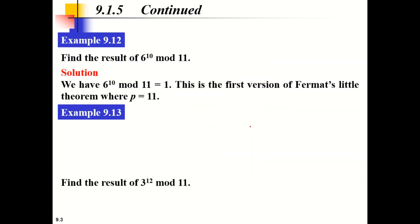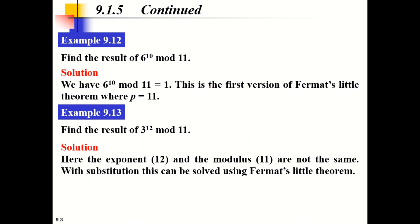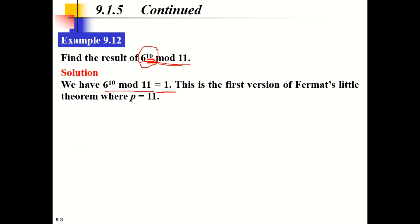Now for the examples to make the idea of Fermat's theorem clear: we have to find the result of 6 raised to 10 mod 11. Here we have a large power, so it's not easy to calculate. If you have a larger number, it becomes a problem. So we can apply the first version of Fermat's theorem: 6 raised to 10 mod 11.